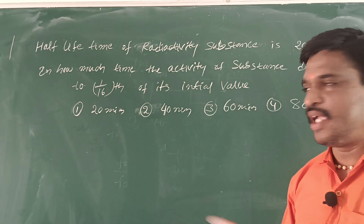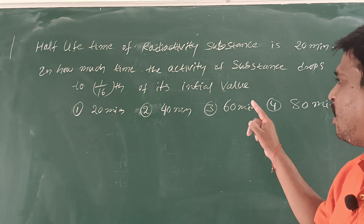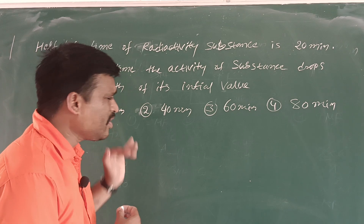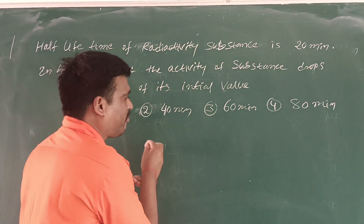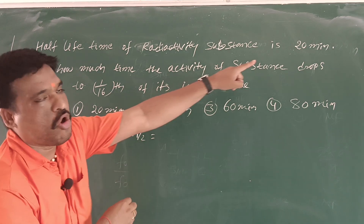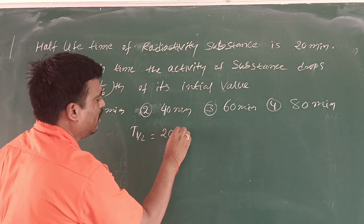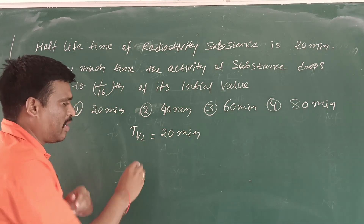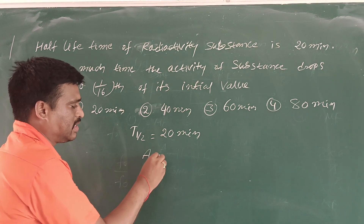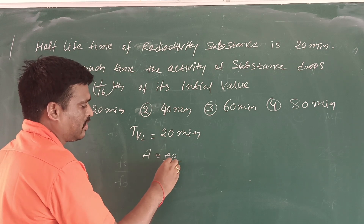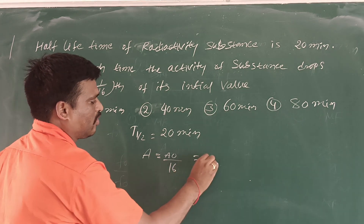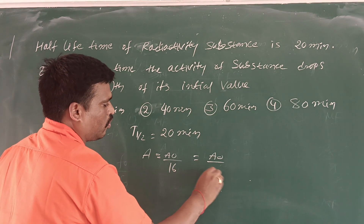So what is the initial value? Now see, you know half-life time. Half-life time means t½ is equal to how many minutes is given? 20 minutes is given. You know one formula: A is equal to A₀ by 16 is given. 16 is converted — that is equal to A₀ by 2 power 4.